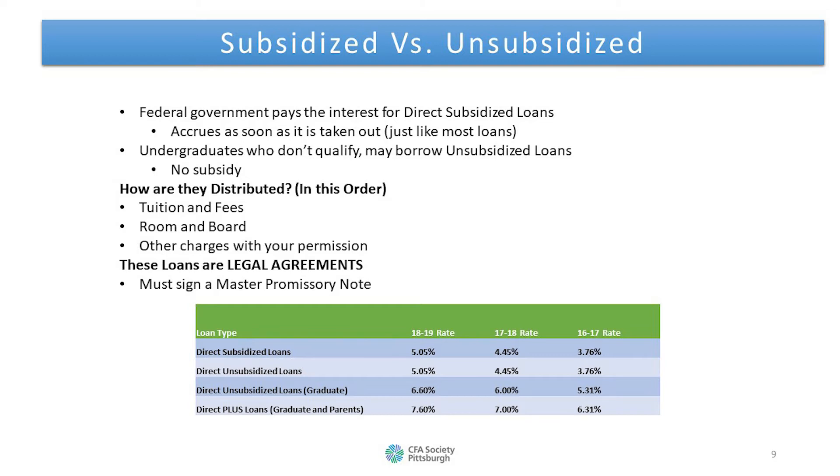Now you may be thinking, since federal government loans are subsidized and the interest is being paid for, is there any requirement that comes with that? Well yes, whenever your subsidized loan is given to you it goes straight to your school. It pays for things in a sort of order: first tuition and fees, then room and board. It is important to note that both subsidized and unsubsidized loans are legal agreements, which means you must sign a master promissory note. Take a look at the bottom to figure out how your situation may apply to these different types of loans and their different interest rates.